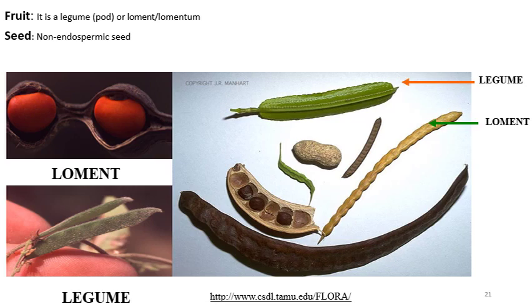The seed of this Fabaceae family is non-endospermic, meaning the seeds do not have an endosperm in the mature seed. The cotyledons are thick and fleshy and function as the sole food storage organ. Dicot plants generally have non-endospermic seeds.